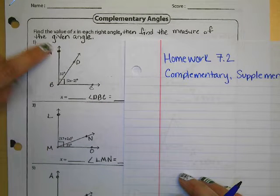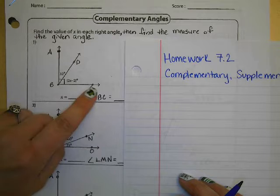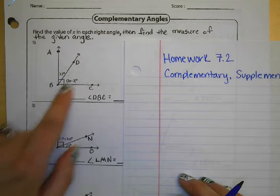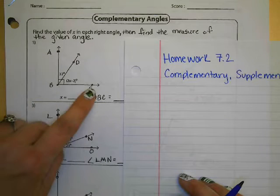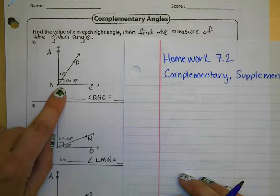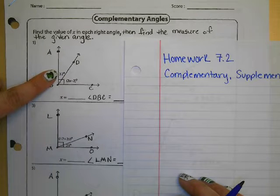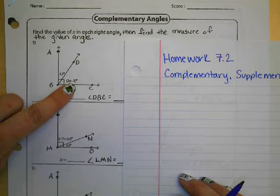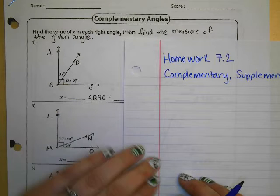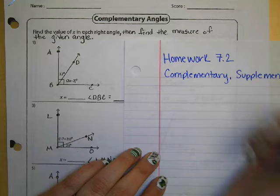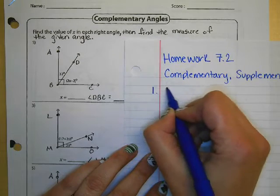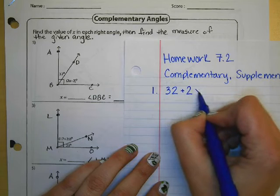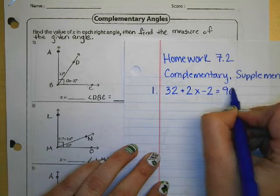Looking at this chart, we have an angle A, B, C, and then we have a line D that's kind of intersecting that. What we know from this little triangle is that angle ABC is a 90 degree angle. So that means that this little angle here labeled 32 degrees plus 2x minus 2 degrees is going to be equal to 90 degrees. So we're going to go ahead and set up our equation: 32 plus 2x minus 2 is equal to 90 degrees.